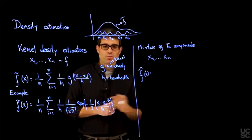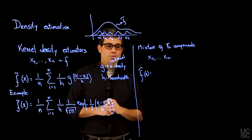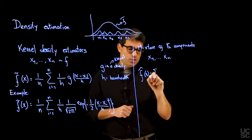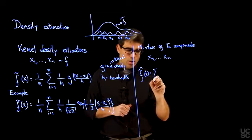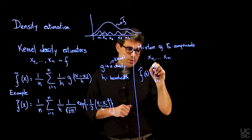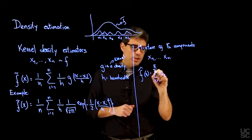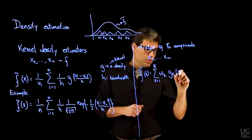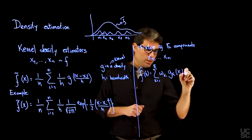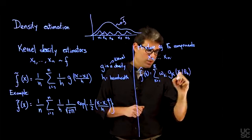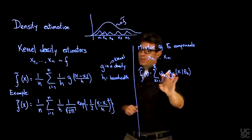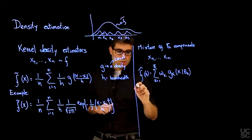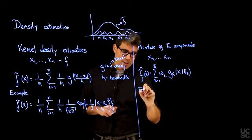By fitting the mixture model and taking, for example, the maximum likelihood estimators that you obtain from using your EM algorithm into the formula for the mixture model, you will get something that looks like the sum from K equals 1 to K of omega K times G sub K of X given theta K.